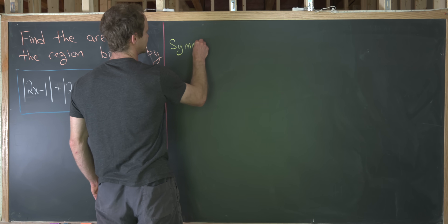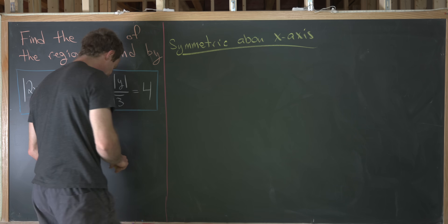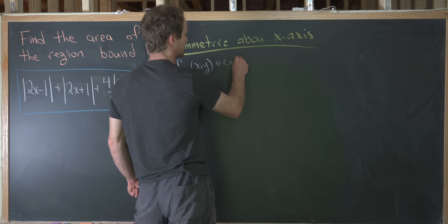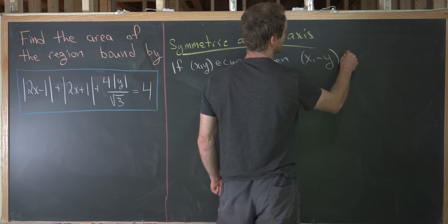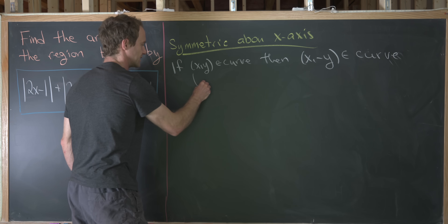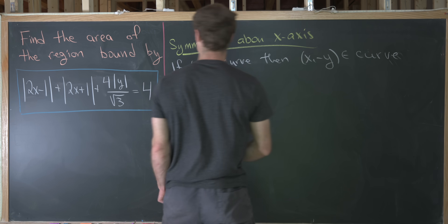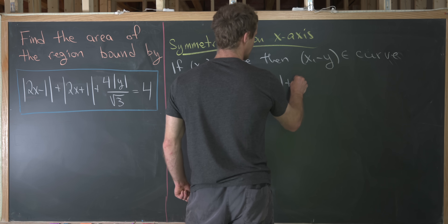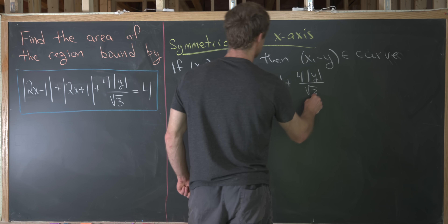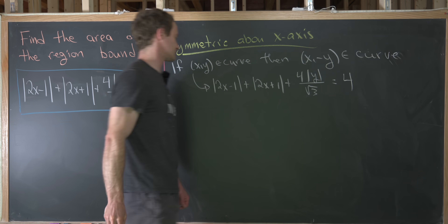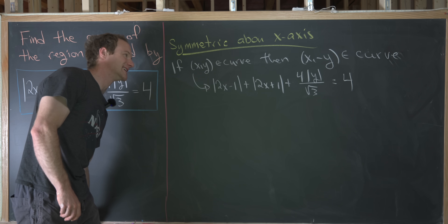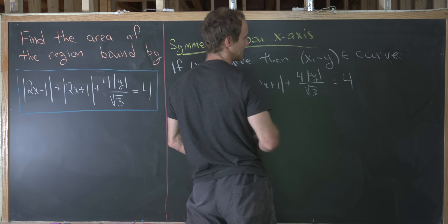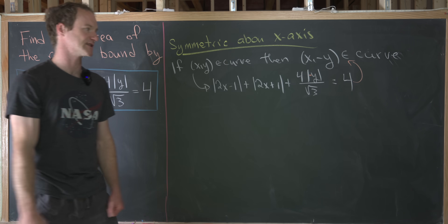Let's first show that this curve is symmetric about the x-axis. That follows if we can show that if (x, y) is on the curve, then (x, −y) is also on the curve. If (x, y) is on the curve, that means x and y satisfy: |2x − 1| + |2x + 1| + 4|y|/√3 = 4. If we replace y with −y, since that's inside an absolute value, really nothing changes. So (x, −y) is on the curve.